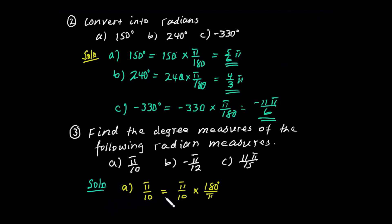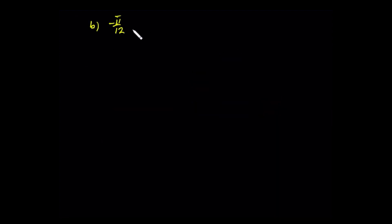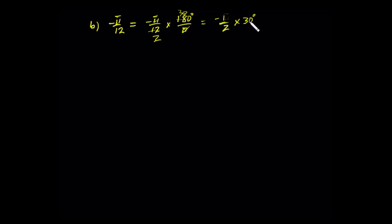Solution A: pi over 10 is equal to pi over 10 times 180 degrees over pi. Pi over pi cancels. Solution B: negative pi over 12 times 180 degrees over pi. Pi over pi cancels. This gives negative 1 over 10 times 2 times 30, which is equal to minus 15 degrees.